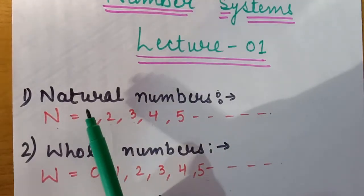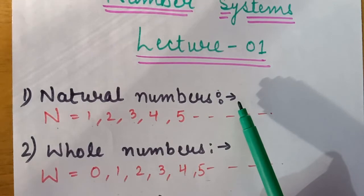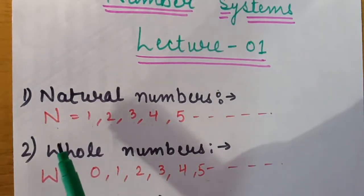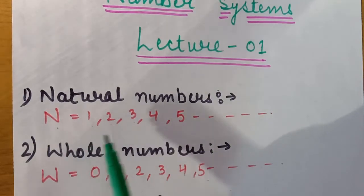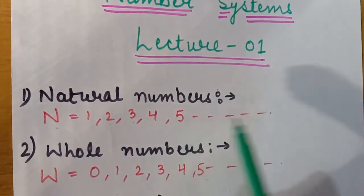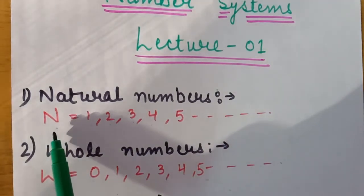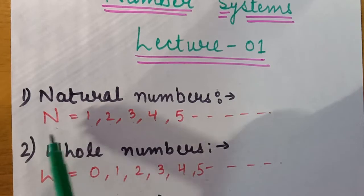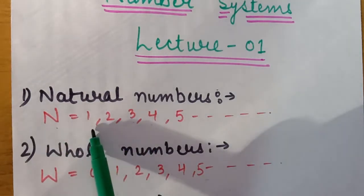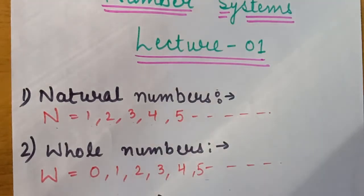First are natural numbers. Natural numbers are counting numbers like 1, 2, 3, 4, 5 and so on. We denote natural numbers with capital N. We know 1 is the first natural number but we don't know about the last natural number.